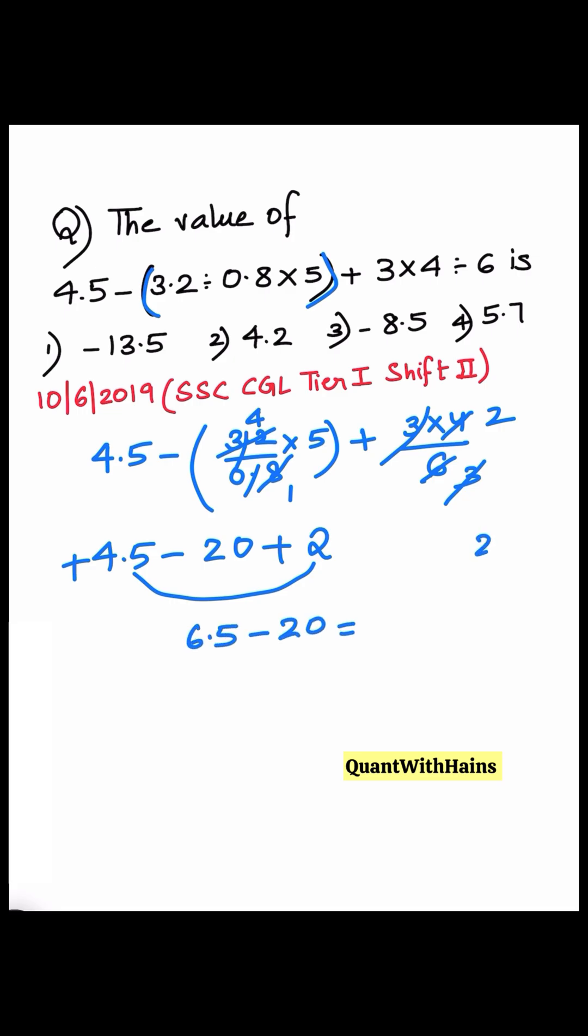Equals 20 minus 6.5, which is 13.5. Our answer is minus 13.5 because minus is there for the larger number 20. The answer is option 1.